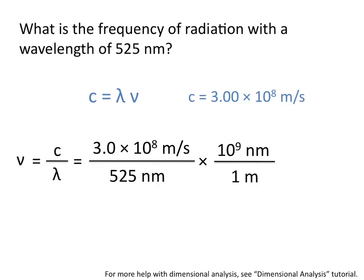You also could have written this conversion factor 1 nanometer per 10 to the negative 9th meters. This allows us to cancel out units of meters and nanometers and leaves us in units of inverse seconds. And so our frequency is 5.71 times 10 to the 14th inverse seconds.